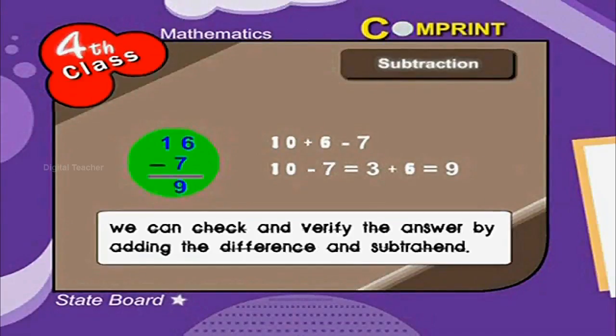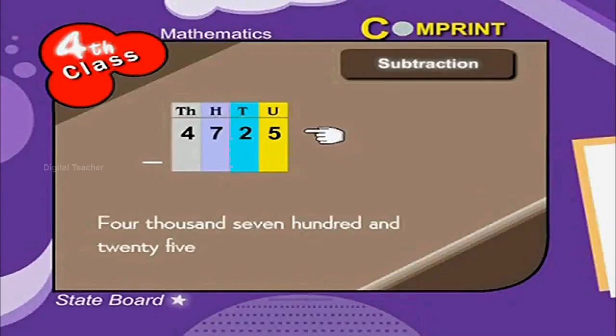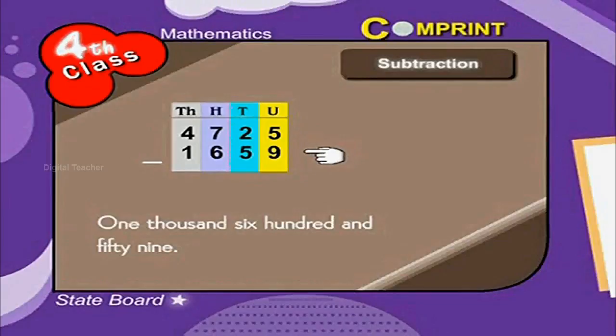We can check and verify the answer by adding the difference and subtraction. Look at the example. 4725 minus 1659.